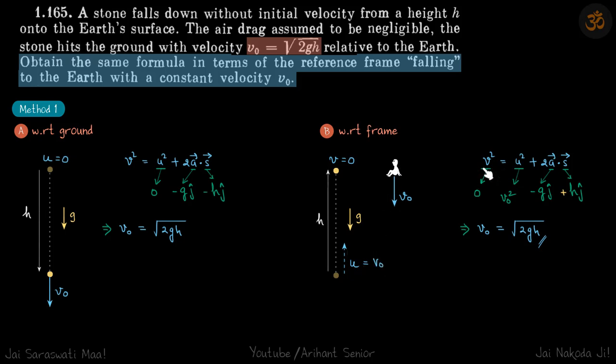Now we are again going to use the same formula but this time we will put the terms with respect to our reference frame. So with respect to our reference frame, final velocity is 0, initial velocity is v₀ square—I mean u² is v₀².